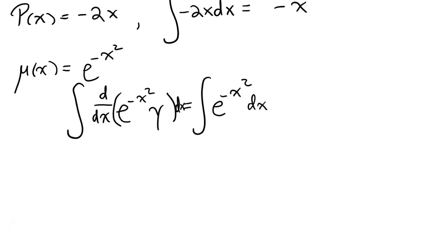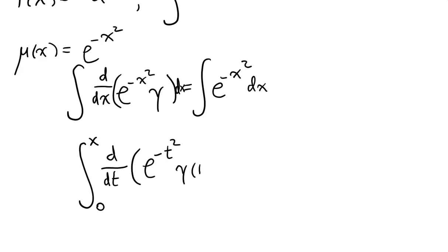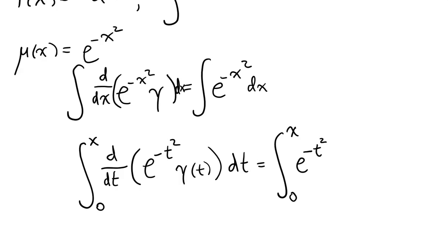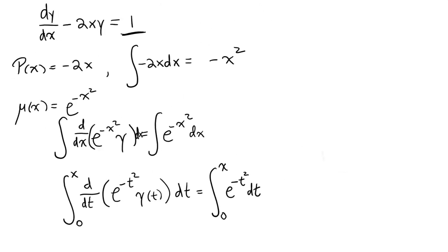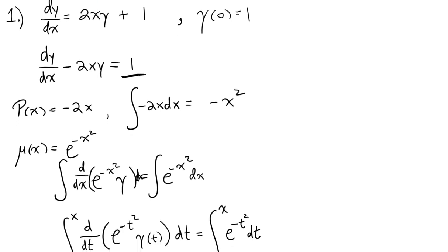What we will do instead is define some bounds. We will take the integral from 0 to x of both sides, giving us d/dt of e to the minus t squared times y — where y is a function of t — with respect to t. On the right-hand side we similarly take the integral from 0 to x of e to the minus t squared dt. I did forget to write one thing: this differential equation has an initial condition, y(0) = 1. It's an initial value problem and we need that initial condition to be satisfied.